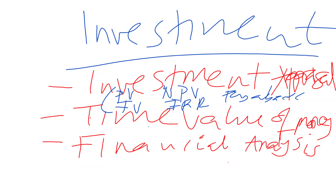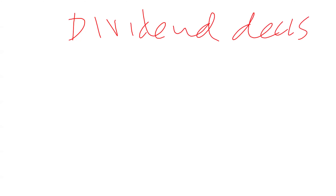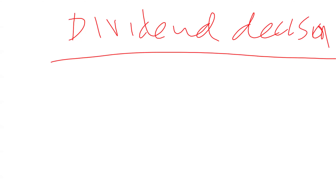That covers investment decisions. I have now highlighted seven topics already across this course outline. The last set of decisions are what you call dividend decisions. There are just three major decision types — if you know them, you know the whole course, though truly understanding them takes time.